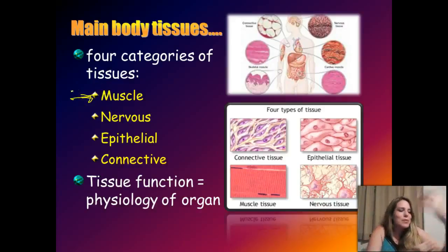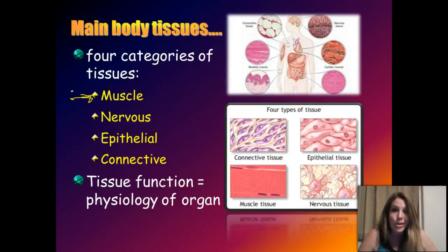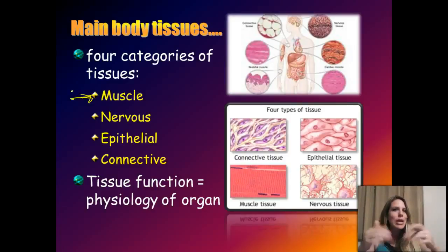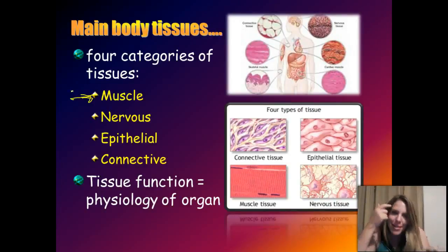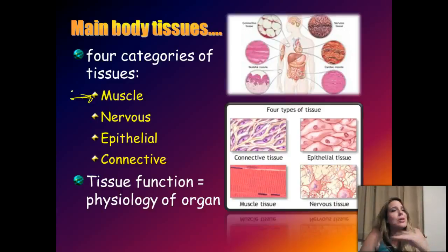A tissue is a group of cells performing similar functions, along with extracellular matrix. We have muscle tissue — the muscles you think about like your biceps, triceps, or quadriceps are skeletal muscles under your conscious, voluntary control. But you also have muscle tissue not under voluntary control, such as smooth muscle lining your blood vessels and intestine, which operates automatically like autopilot.